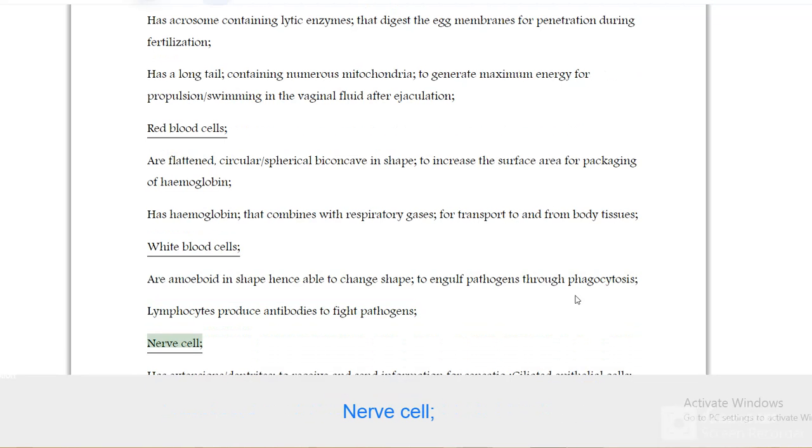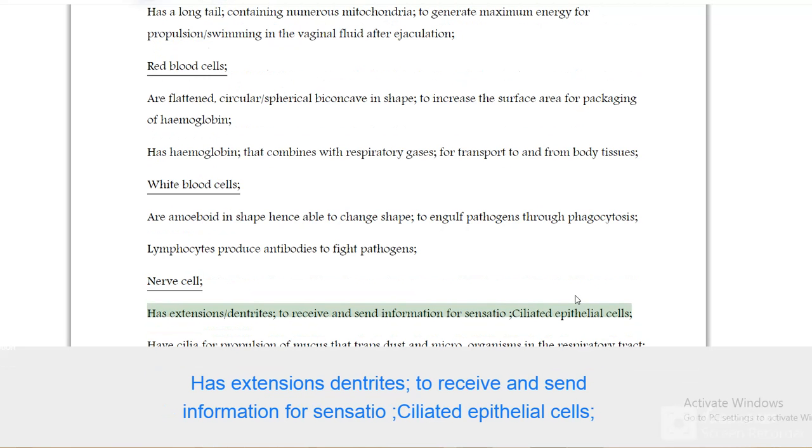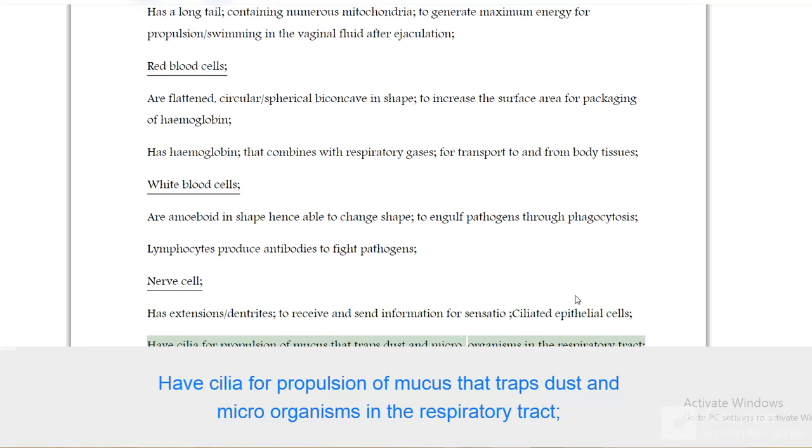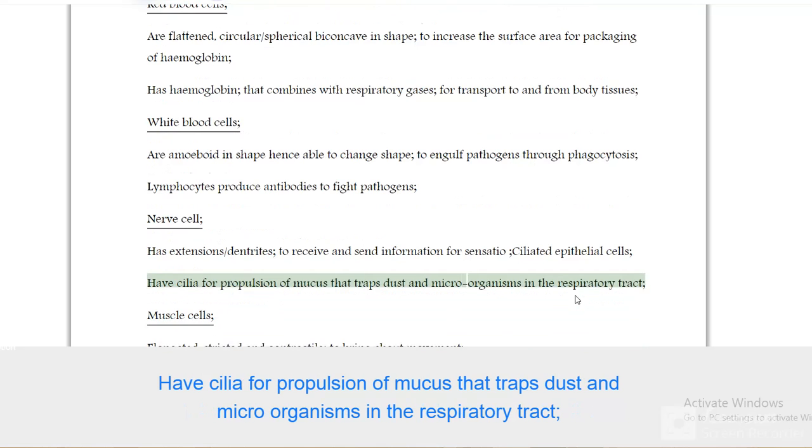Nerve cell has extensions, dendrites, to receive and send information for sensation. Ciliated epithelial cells have cilia for propulsion of mucus that traps dust and microorganisms in the respiratory tract.